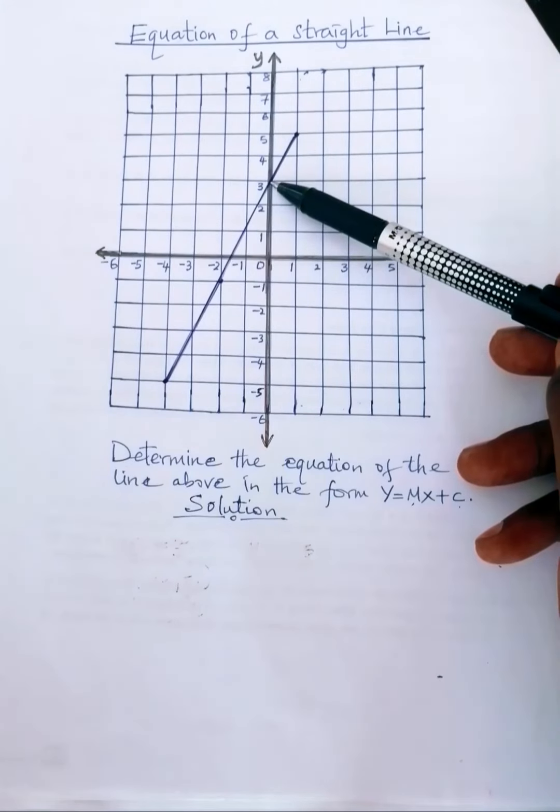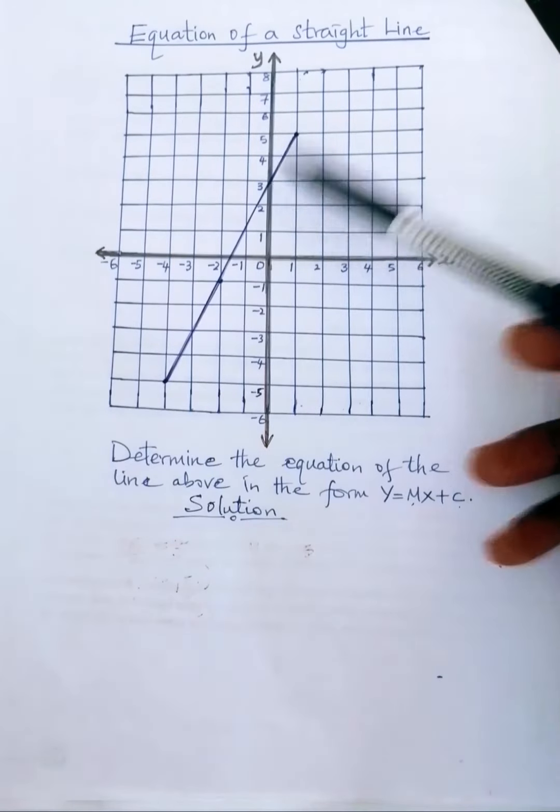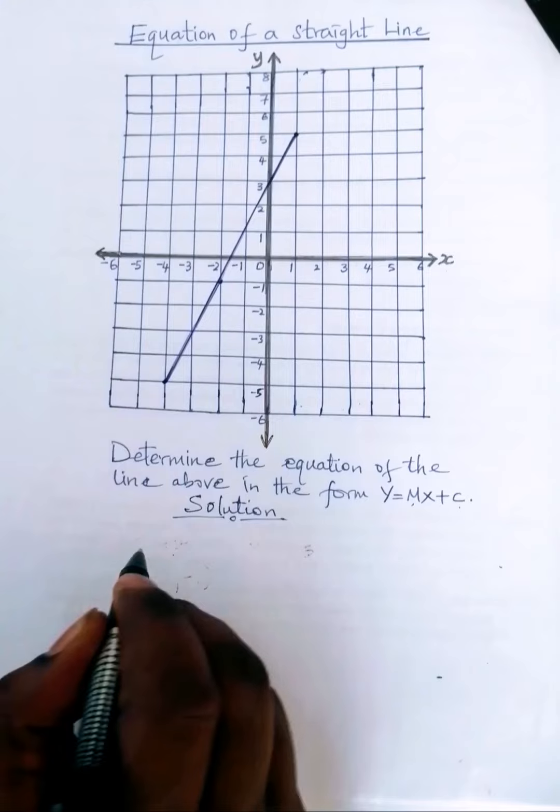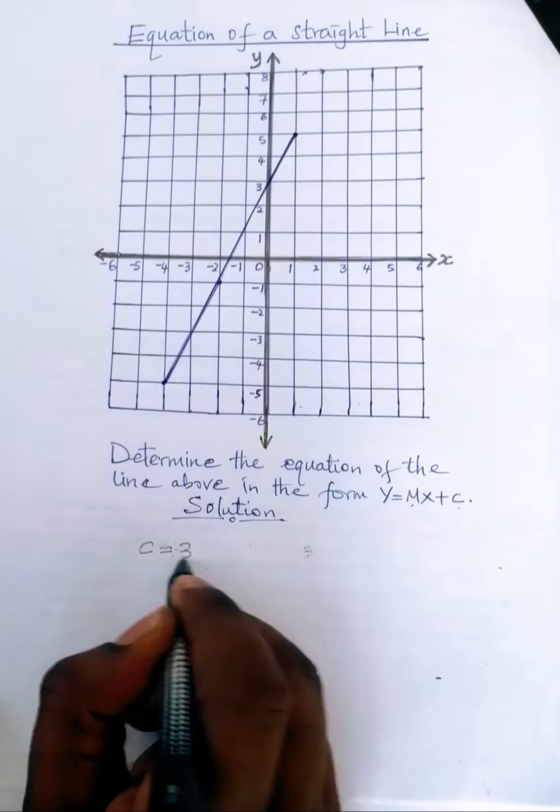At this point here, the value of y is 3, so that is the y-intercept. So we can say that c is 3.